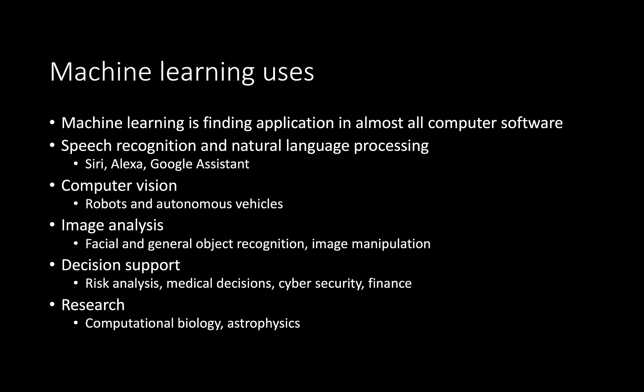Machine learning is used pretty much everywhere. Speech recognition of personal assistants like Siri, Alexa, Google Assistant. In computer vision, allowing robots and autonomous vehicles to recognize their environment and objects. Image analysis for facial recognition and general object recognition. Image manipulation, decision support in risk analysis, medical decisions, cybersecurity and finance. In medicine, for example, you can feed a range of symptoms and observations to a machine learning algorithm and it can potentially predict what disease or illness they may correspond to. Also used in research: computational biology, astrophysics, computational chemistry.